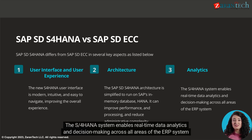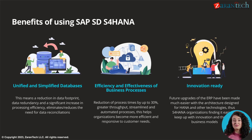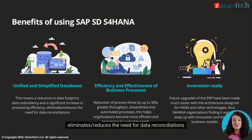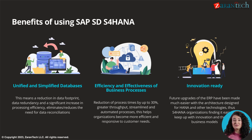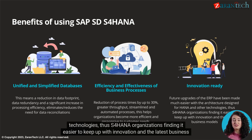Analytics — the S/4 HANA system enables real-time data analytics and decision-making across all areas of the ERP system. The adoption of SAP S/4 HANA can provide significant benefits, including unified and simplified databases, meaning a reduction in data footprint, data redundancy, and a significant increase in processing efficiency that eliminates the need for data reconciliations. Efficiency and effectiveness of business processes — reduction of process times by up to 30%, greater throughput, and streamlined and automated processes, helping organizations become more efficient and responsive to customer needs. Innovation ready — future upgrades of the ERP have been made much easier with the architecture designed for HANA, making it easier for organizations to keep up with innovation and the latest business models.